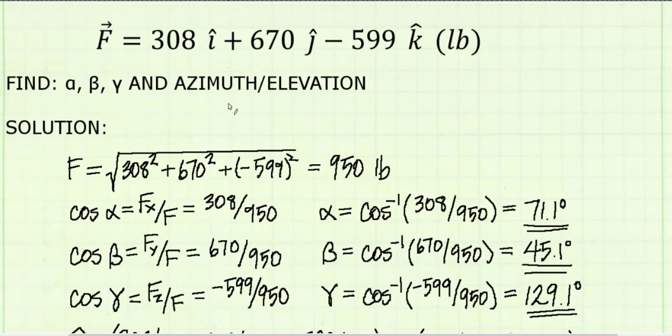The problem also asks us to find the azimuth and elevation angles. The azimuth and elevation angles are an alternative way to show the direction of this vector. And we'll use two angles, theta and phi.